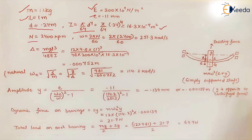N is given in the question as 2400 rpm, so we can calculate ω = 2πN/60.